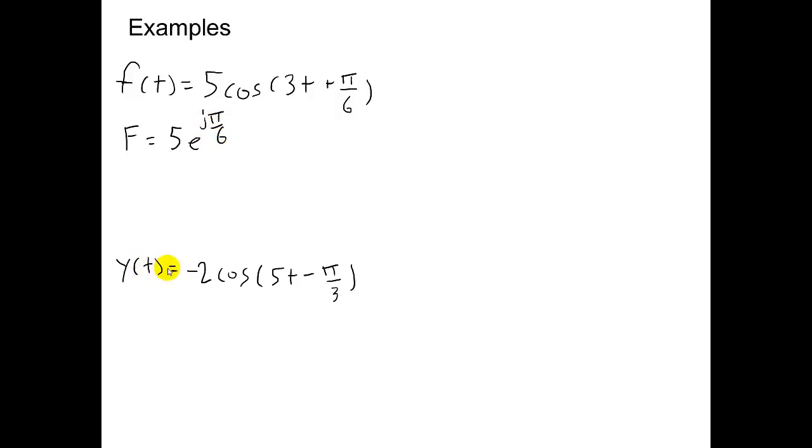In this example, Y(t) equals minus 2 cosine of 5t minus pi over 3. You can write Y in phasor form as minus 2e to the minus j pi over 3.